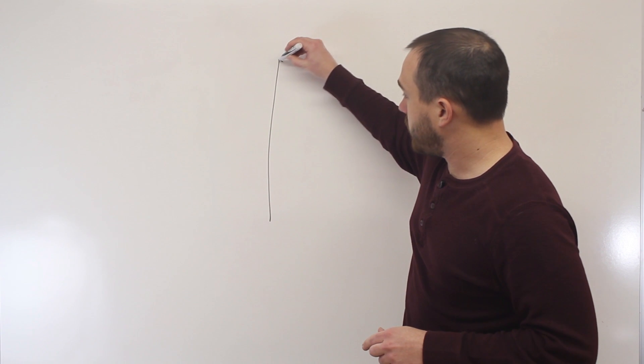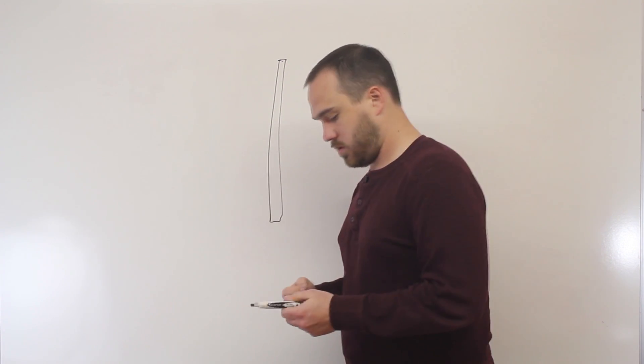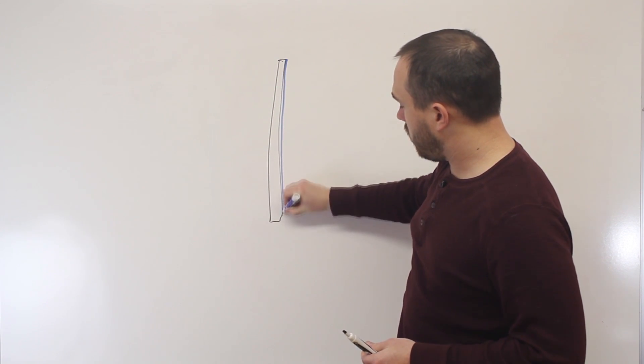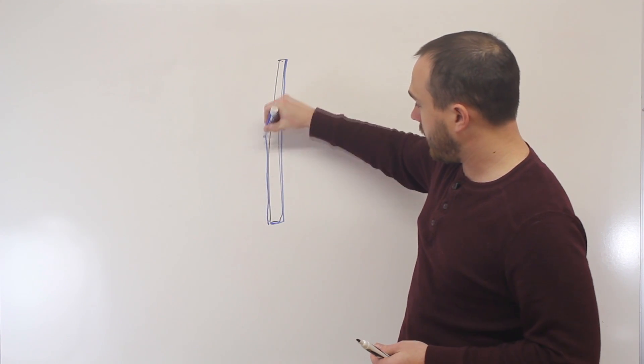So you have your material, your steel, and then you're going to put a layer of zinc over top of it. Now this comes into the factory, into our factory, like this.